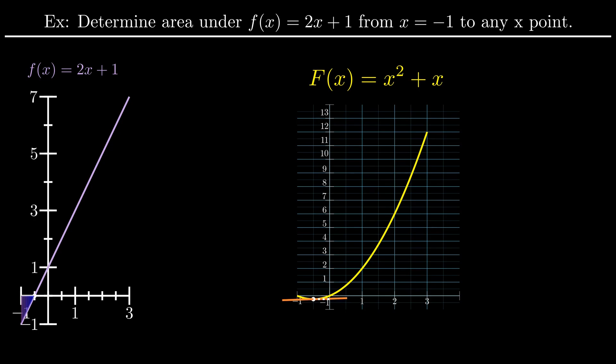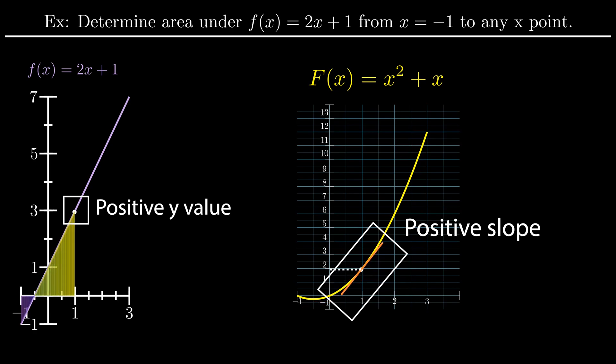The same logic applies to positive y values on the linear function. Positive y values equals positive areas. And if these y values are positive, then the slope on the parabola is increasing. And given this tells us the exact value of the area, the area will then be increasing. I know this is a lot to absorb, so I strongly recommend just to pause and ponder this for a moment.